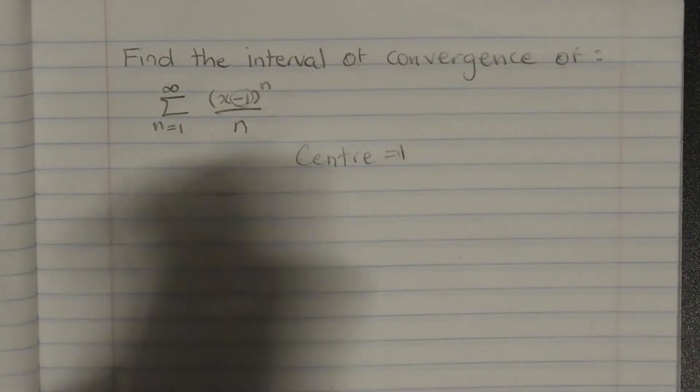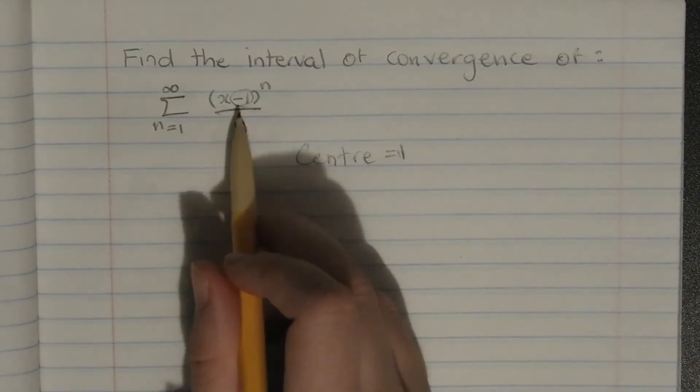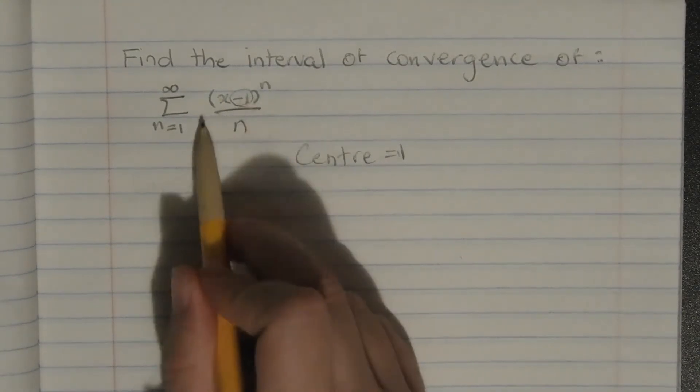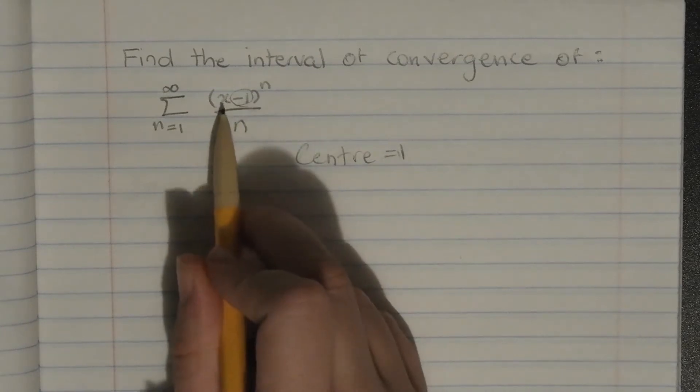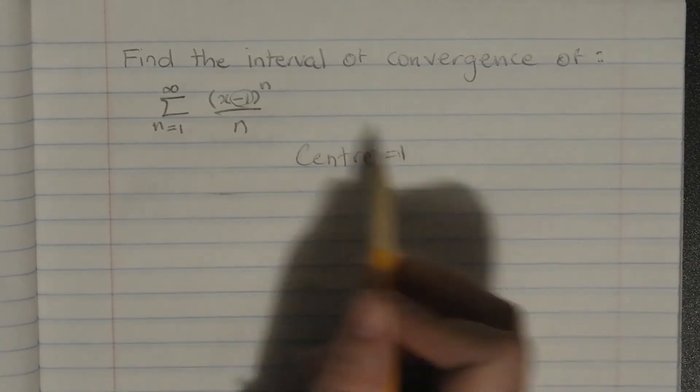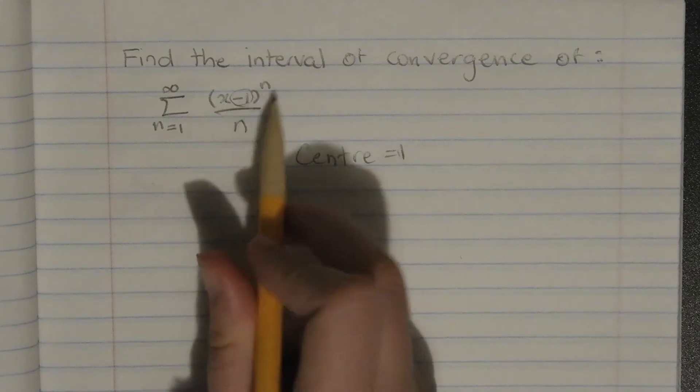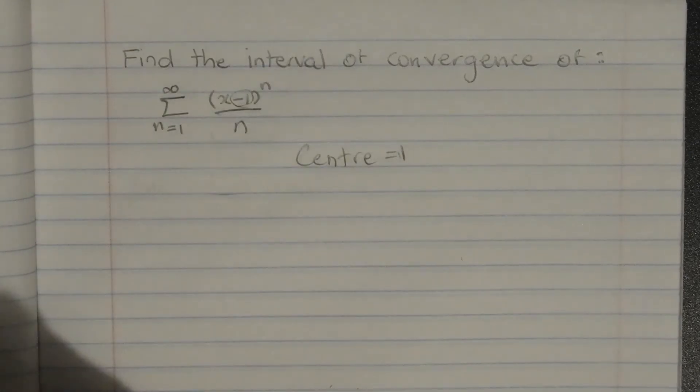Hello everyone. We're going to find the interval of convergence of the sum n equals 1 to infinity of (x minus 1) to the n on n. The first thing to note is the center. The center of this interval is 1. We know this because there's a minus 1 next to the x, and the center is the opposite sign to whatever is next to the x. So if it was (x plus 1) to the n, the center would be minus 1, but it's (x minus 1) to the n, so the center is 1.